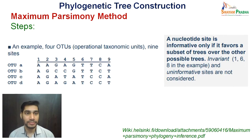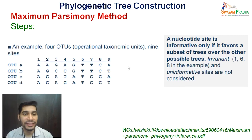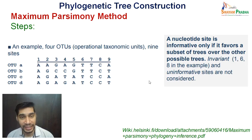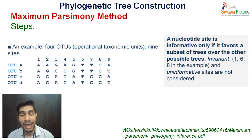Let us see how maximum parsimony works. For example, take four OTUs: A, B, C and D with nine different sites. A nucleotide site is informative only if it favors a subset of trees over the other possible trees. Some sites are invariant — for instance, sites one, six and eight show no variation. These invariant sites are not considered for tree construction. Besides invariant sites, there are also uninformative variable sites which we do not consider.